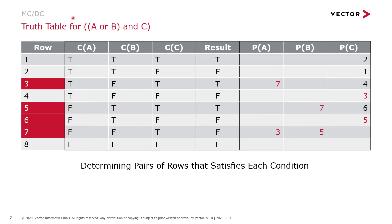Here we have a truth table for conditions A, B, and C. This truth table will also be used in the demo later on. For MCDC, for each condition, we want to find a pair of rows that satisfies that condition, where the condition changes, the result changes, but the other two conditions remain the same.